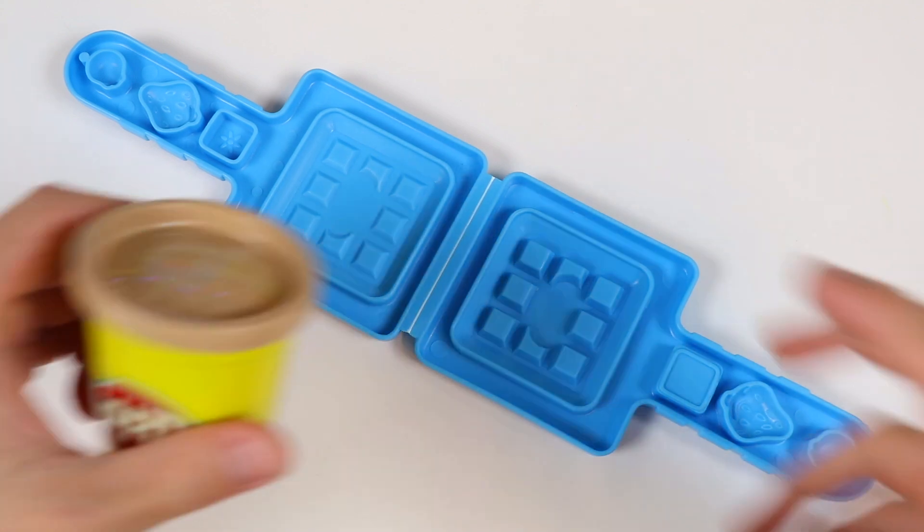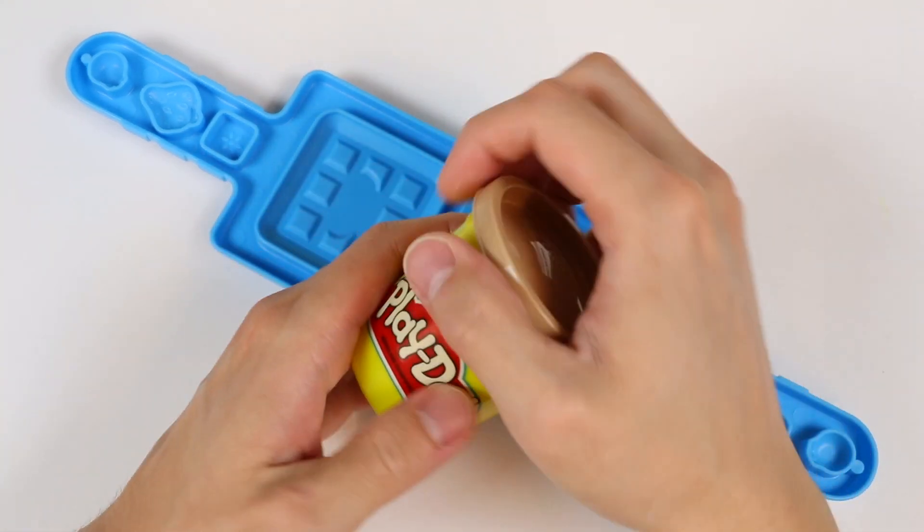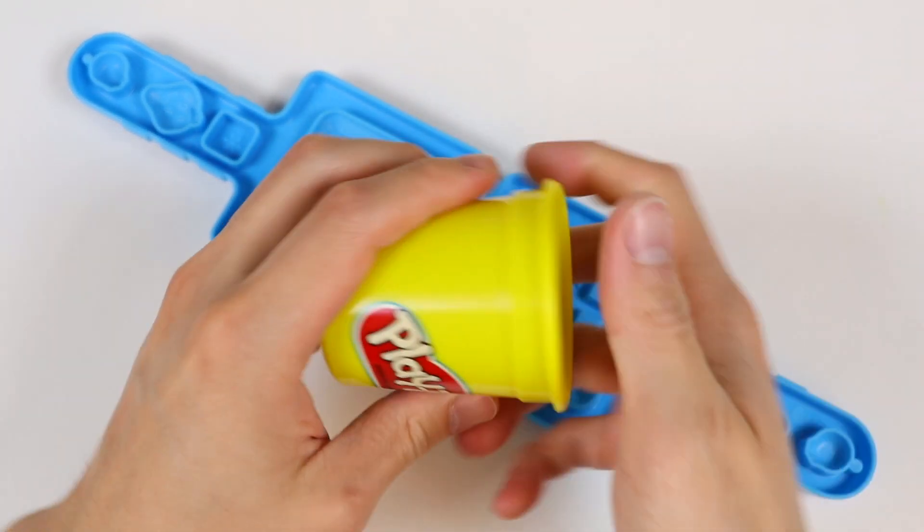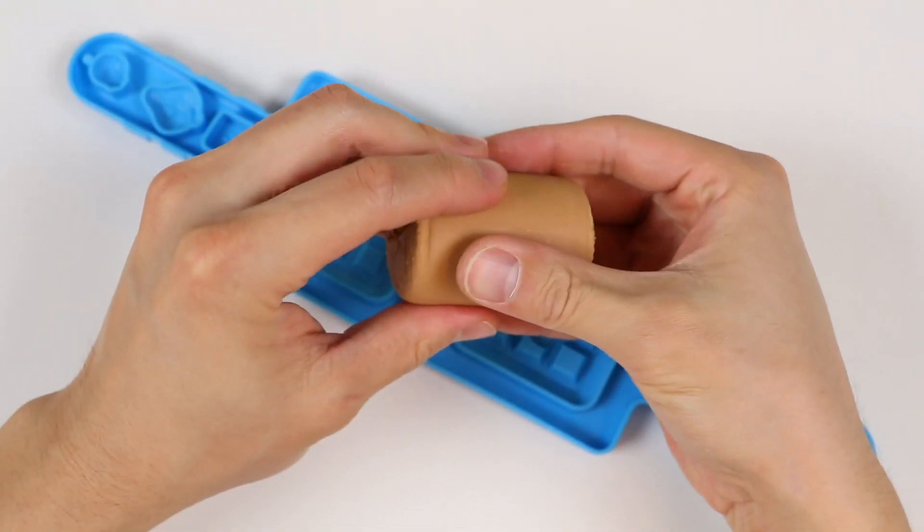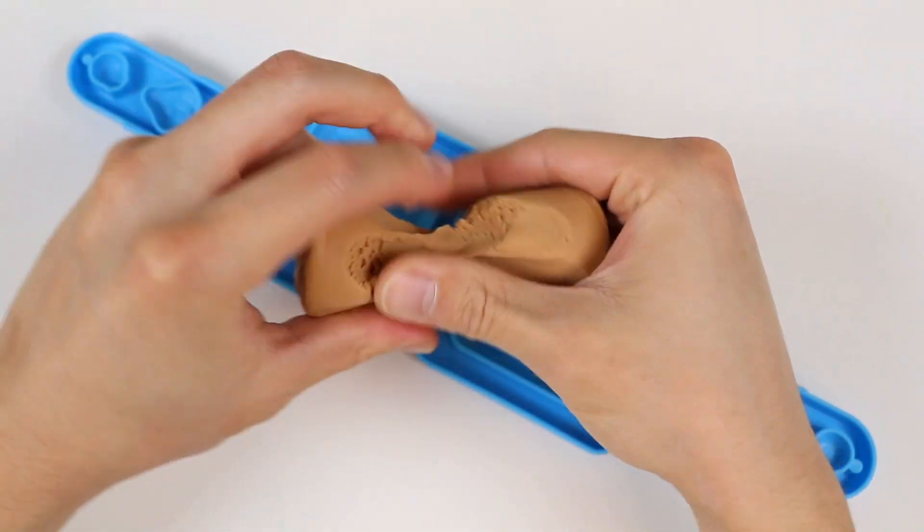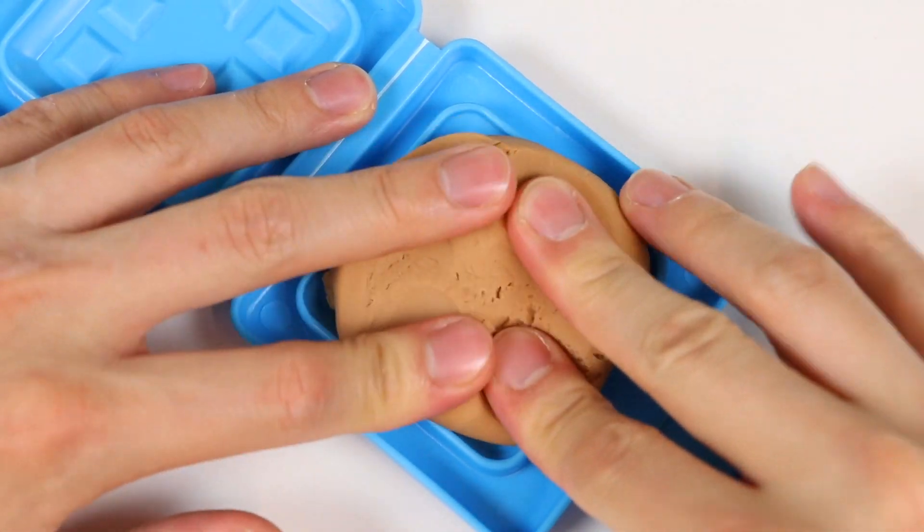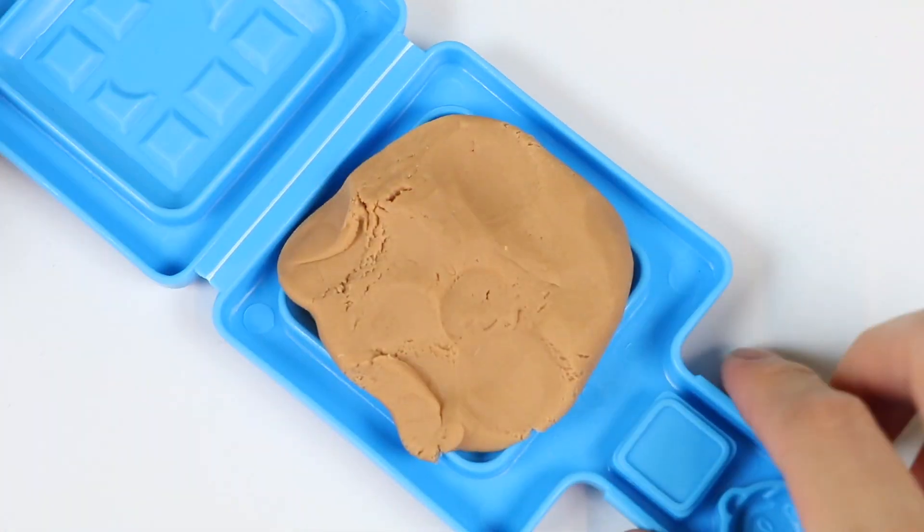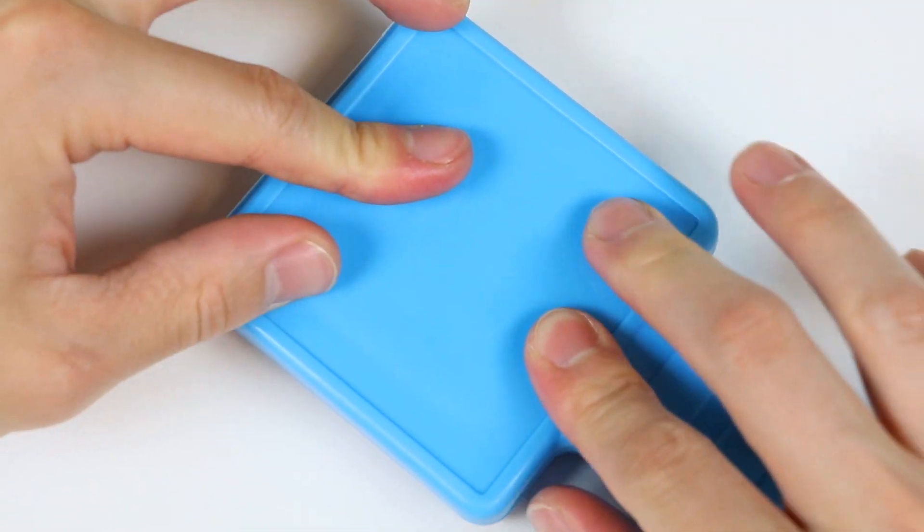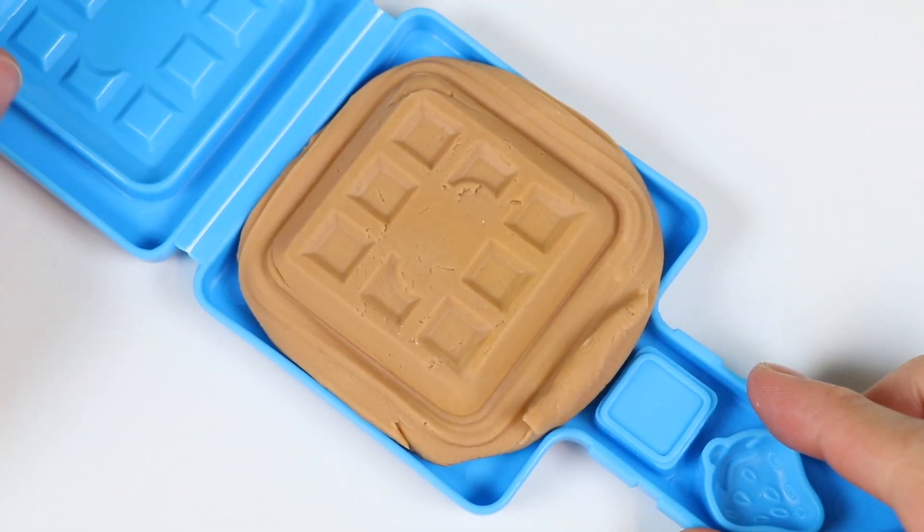Alright, let's start by using the waffle iron. Use brown play-doh and give me a second while I make it. A fresh waffle.